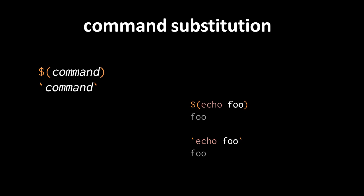You can get the same effect using backticks, but the downside is that because the same character is used as both the start and end delimiter, you cannot nest command substitutions with that syntax. For nested command substitutions you must use the '$()' form. For example, '$(echo foo $(echo bar))' first runs 'echo bar' substituting 'bar', then runs 'echo foo bar', producing 'foo bar'.